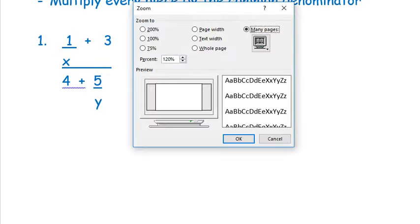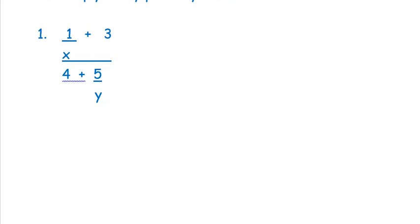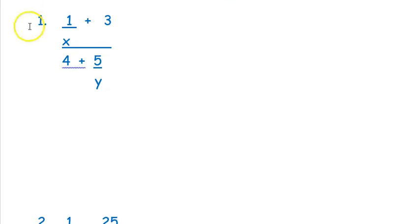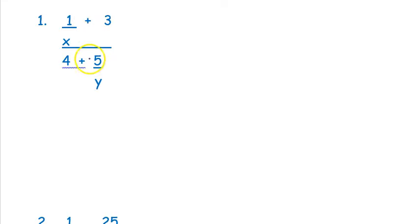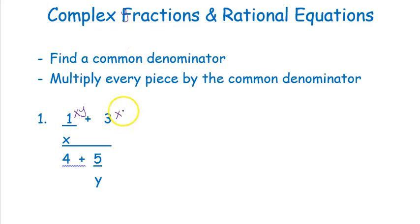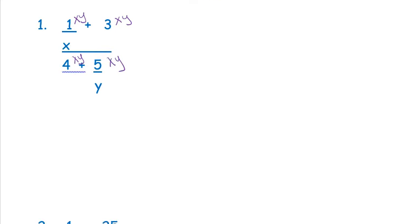A complex fraction just means that you have a fraction inside of a fraction. In example one, I have a little fraction here and a little fraction here, but the whole problem is a fraction — that's why it's considered a complex fraction. I look at the little fractions, this one has denominator x and this one has denominator y, so the common denominator has to be x times y. I'm going to multiply by every piece — that's the second step.